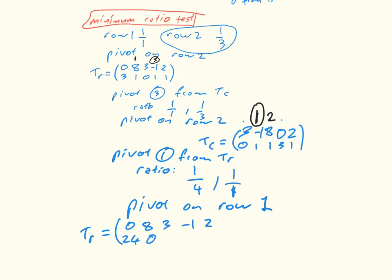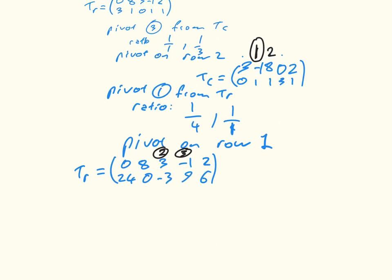And now my labels are 2 and 3. So now I'm going to need to pivot 2 from Tc. My ratios are essentially the same, a quarter and 1 over 1. So I'm comparing those things there.